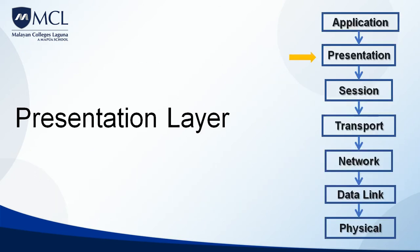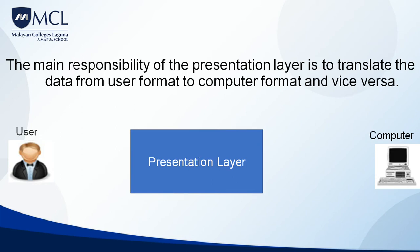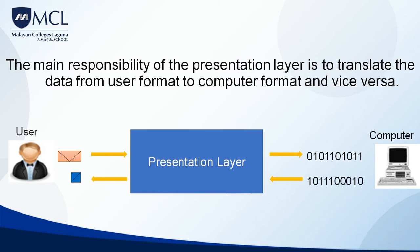Let's proceed to the second layer of OSI, which is the presentation layer. The presentation layer is responsible for translation — it translates data from user format to computer format and vice versa. The data or messages we see in everyday life are in a form we understand, but computers don't understand letters, numbers, or characters — they understand binary. So the presentation layer manages that translation so the computer can understand, and vice versa.